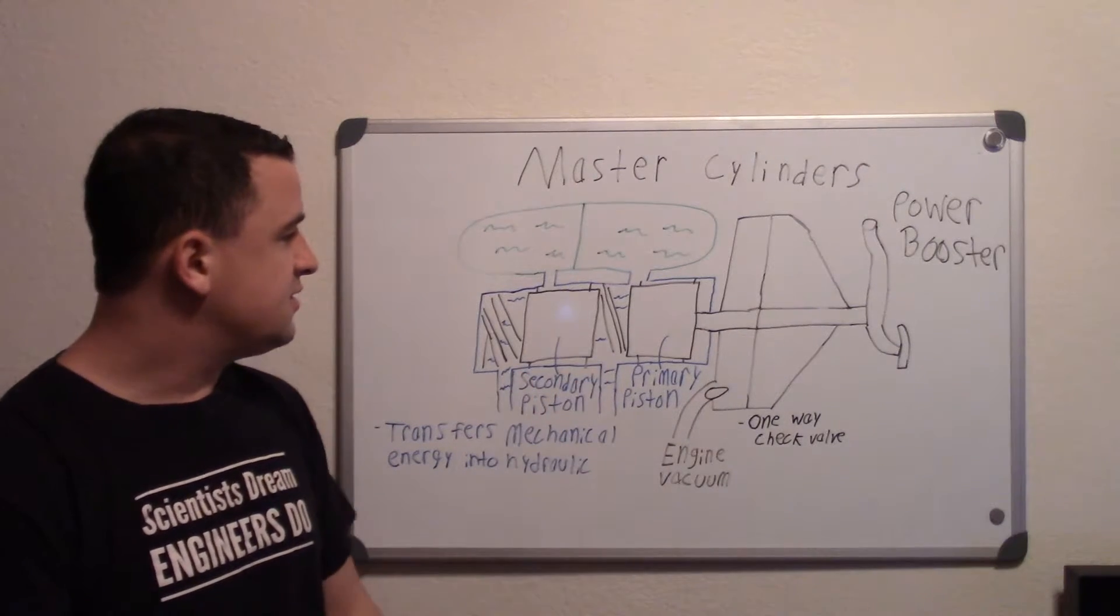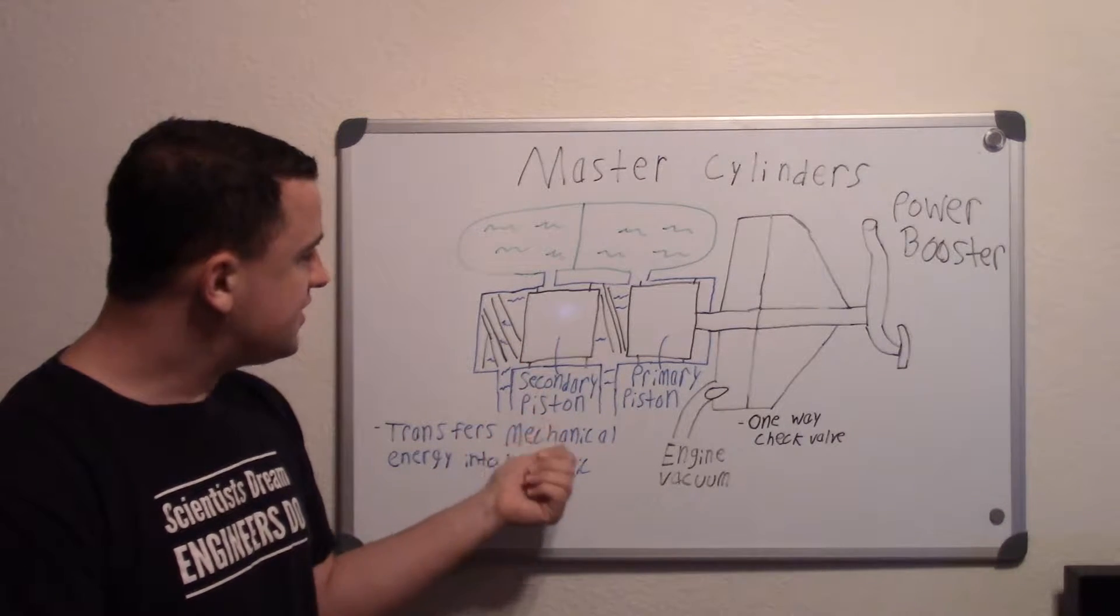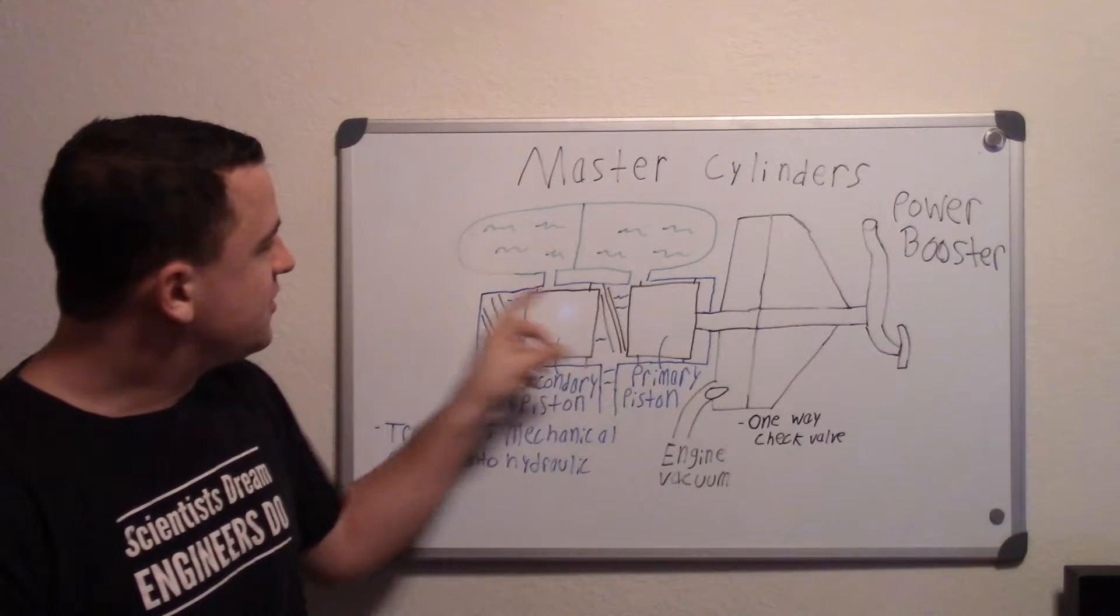So we have a split system. This first one here is called your primary piston, this second one is your secondary piston. And you have springs in between here.